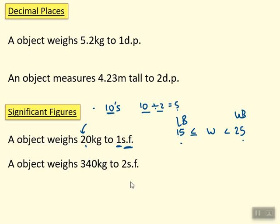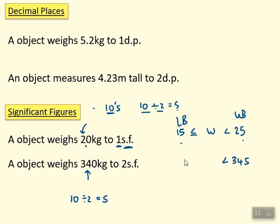Now two significant figures. Look at the number — the second significant figure is in the tens column again, so the basic unit is 10. Divide 10 by 2 to get 5. Add 5 on: 340 + 5 = 345 — that's the upper bound, so less than 345. Take 5 off: 340 − 5 = 335 — that's the lower bound. So the answer is 335 ≤ x < 345.